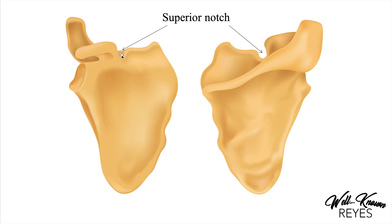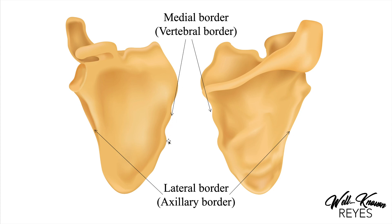Next we have the superior notch — this is the notch right here on the top of the scapula. Now we have the medial border and the lateral border. Lateral means to the side; medial means more towards the midline. Another term for the medial border is the vertebral border, because since this is the right side posterior view, the vertebrae run right down the middle and this border is closer to the vertebrae. The lateral border is also known as the axillary border because it is closer to the axilla, which is our armpit. Make sure you know both terms — medial border is also vertebral border, and lateral border is also axillary border, because the MBLEx can ask you either one.